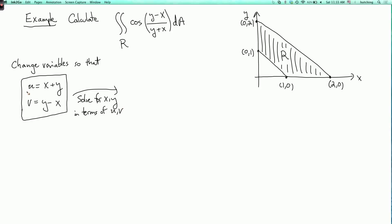So to solve for x, I can take the first equation and subtract the second equation and divide by 2. So I get that x equals u minus v over 2. And to solve for y, I can add the two equations and divide by 2. So I get that y equals u plus v over 2. And this is the transformation T.